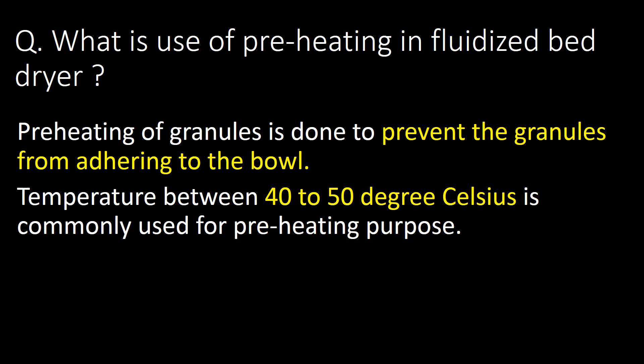What is the use of preheating in a fluidized bed dryer? Preheating of granules is done to prevent granules from adhering to the bowl. A temperature range of 40 to 50 degrees Celsius is commonly used for preheating.